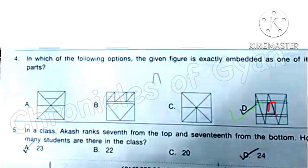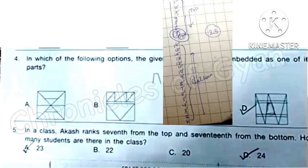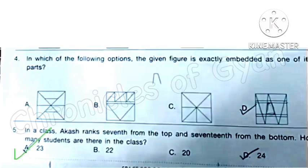Question 5: In a class, Akash ranks 7th from the top and 17th from the bottom. How many students are there in the class? For this question, first make a line, start counting from 1 till 7th rank from top, and from bottom start counting from 1 till 16th. Because 17th and 7th, they are the same person having that rank. So we have to count them as one only. So the total we get is 23 total students. Option A.